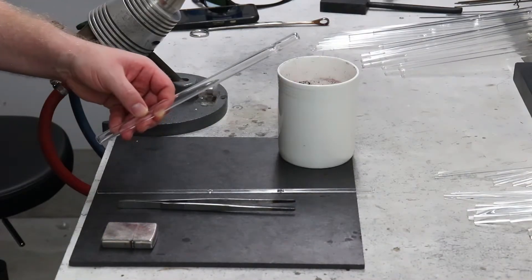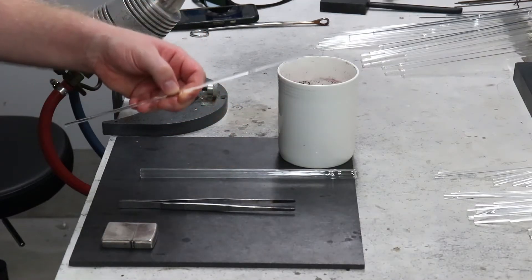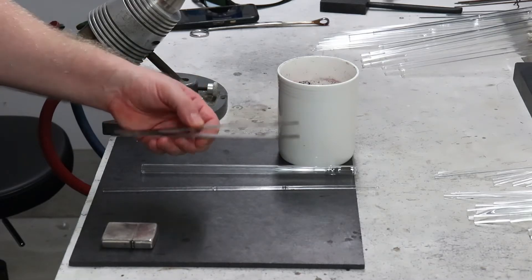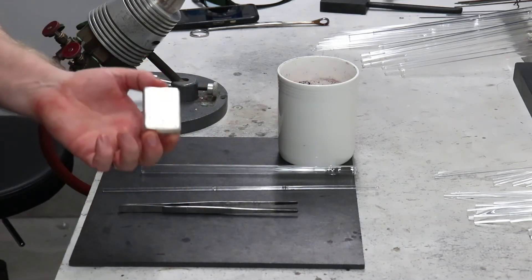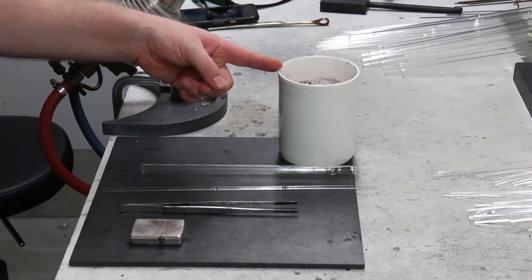So here's what we're going to use. 12mm tube, 4mm rod, you can use whatever you want for that. Whatever you're comfortable with. Some tweezers, of course my trusty Zippo, I highly recommend those. As well as something to knock some glass into.